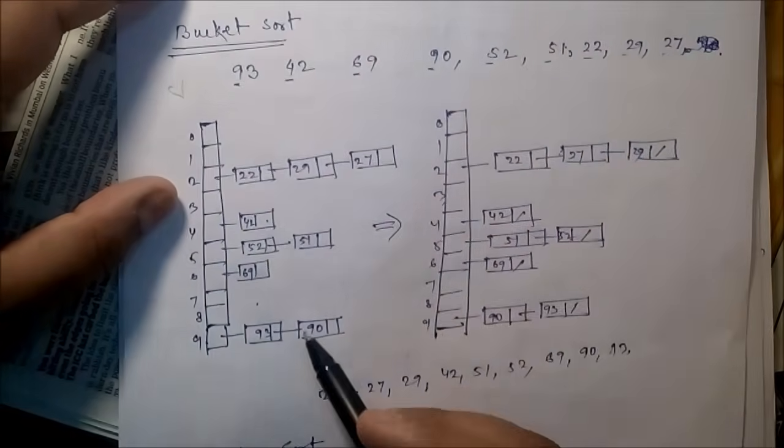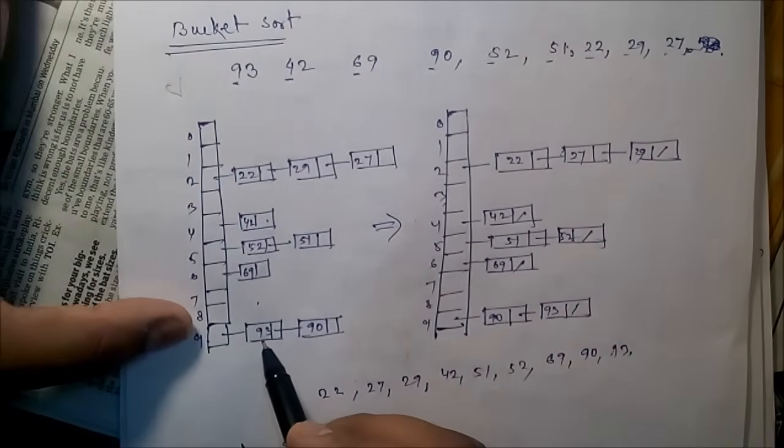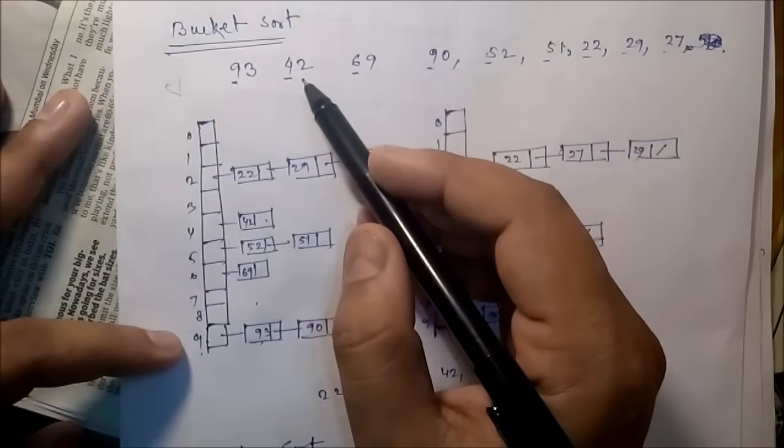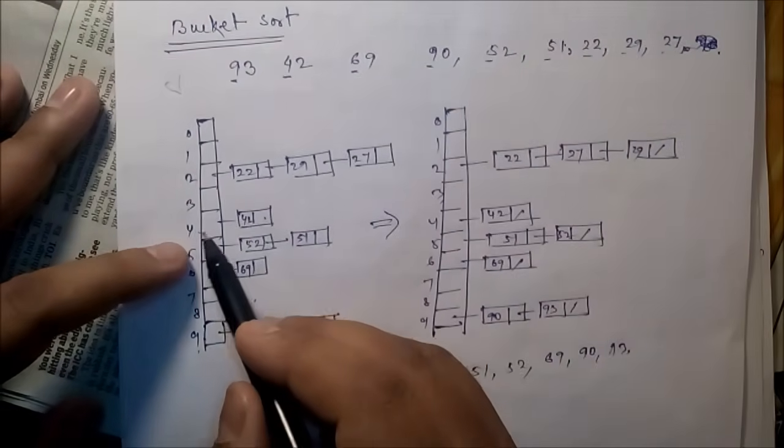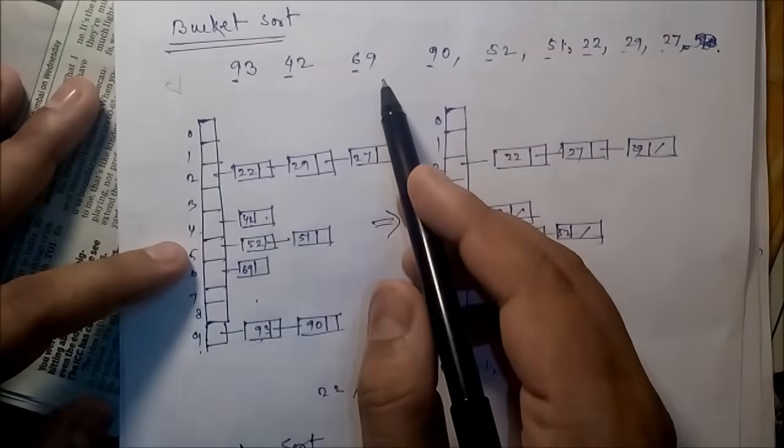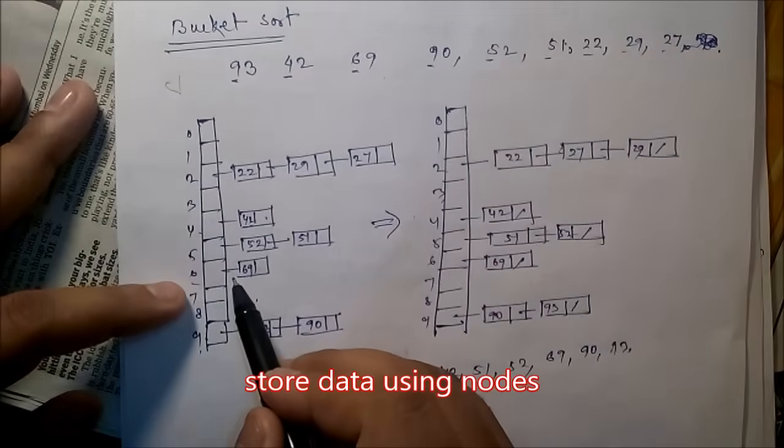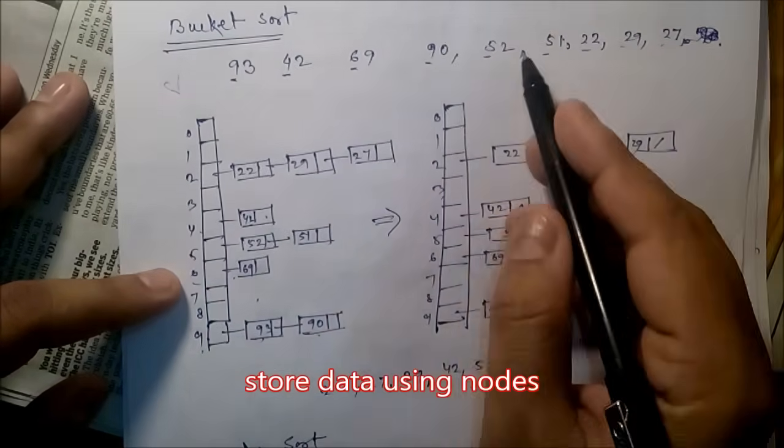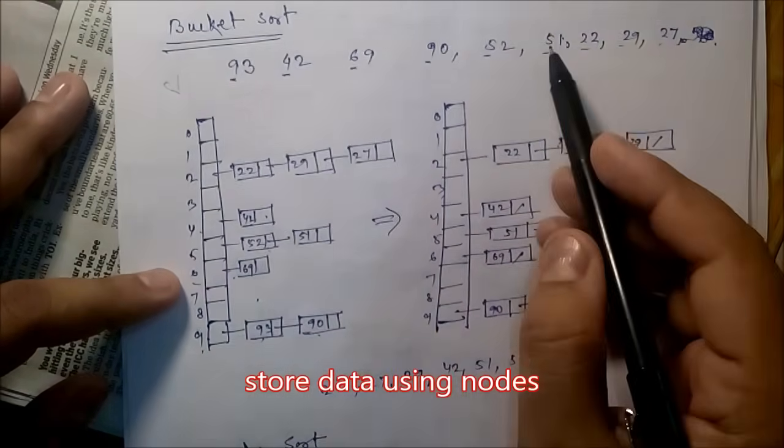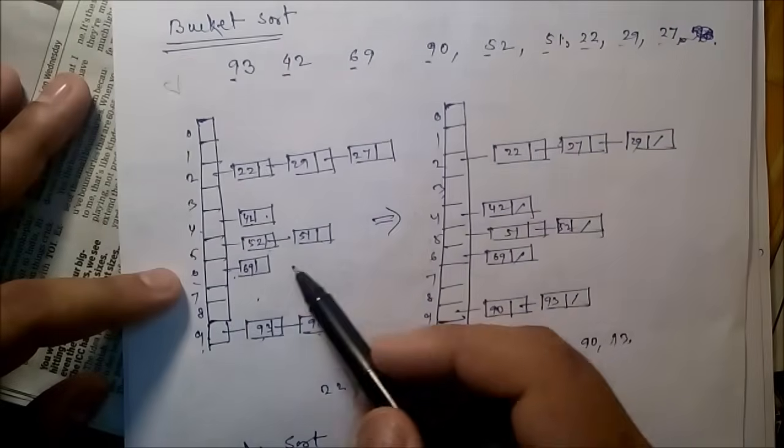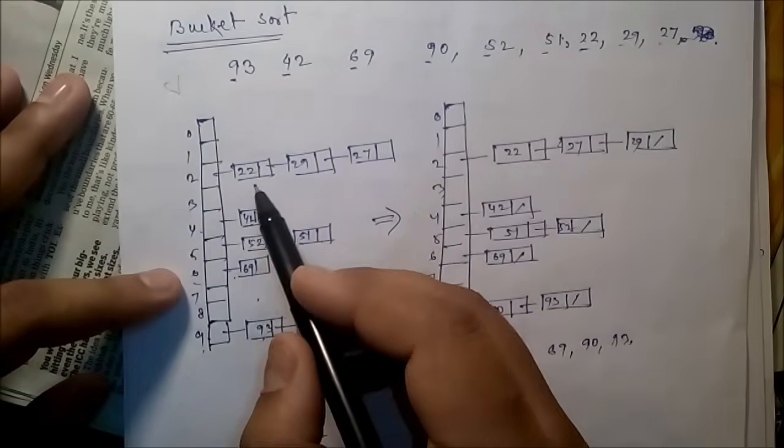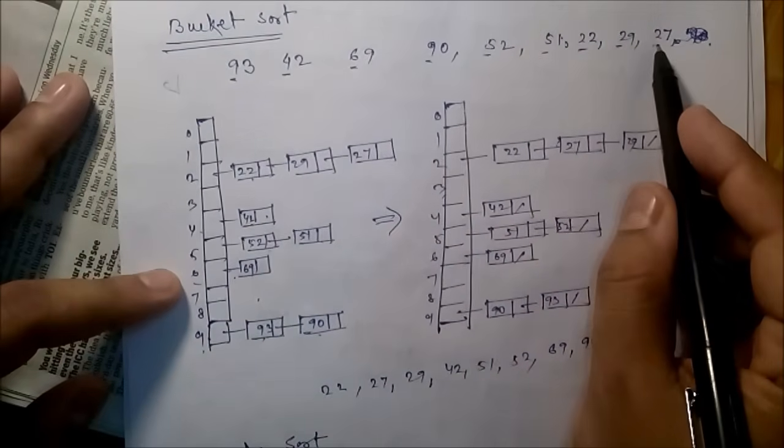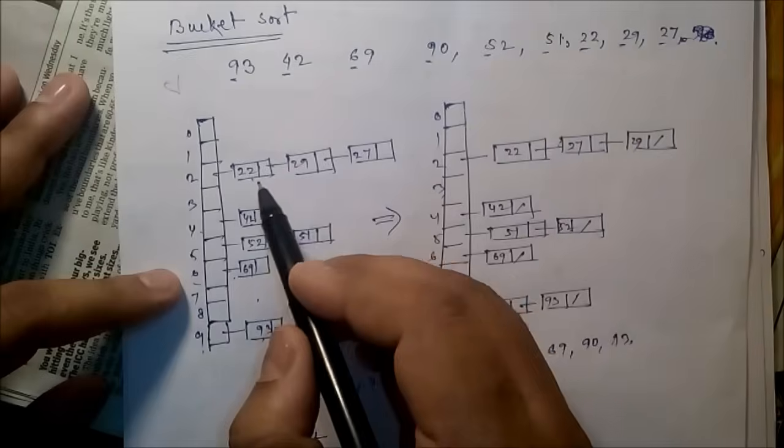So 93 should be here due to this 9, then 42 because of this 4. Here you connect 42, store 42. 69 here, okay. 90, after that 52 here, 51. 22 due to this 2, 22 should be here. 29 due to this 2, 29. 27 due to this 2 should be here.